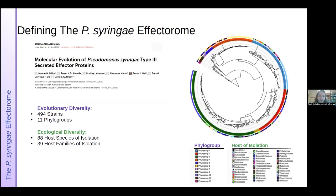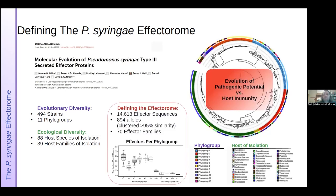Only recently, in 2019, was there a large-scale comparative genomics study of Pseudomonas syringae performed by the DeVol and Gutman labs. 494 strains were sequenced, comprising the majority of the evolutionary diversity of the species complex across 11 distinct phylogroups. A previous postdoctoral student, Marcus Dillon, defined the effectorome of Pseudomonas syringae through sequence homology searches — over 14,000 effector sequences refined into 894 distinct effector alleles and 70 effector families.